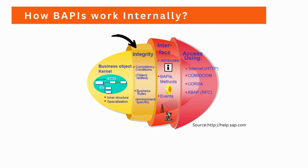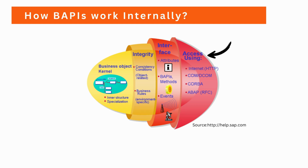The integrity layer makes sure data that is being loaded is consistent and validated. The interface layer exposes the business objects in terms of attributes, methods, and events. The access layer exposes the BAPI to the external world using different protocols like HTTP, COM, CORBA, and ABAP. This framework ensures that when you exchange data between two components using BAPIs, they are reliable, consistent, and validated by SAP.